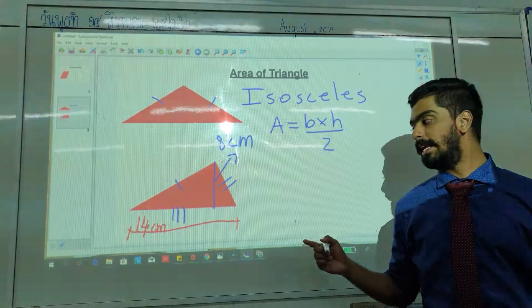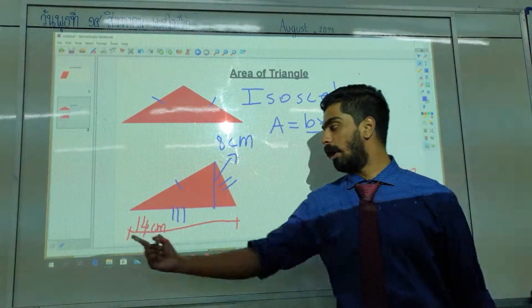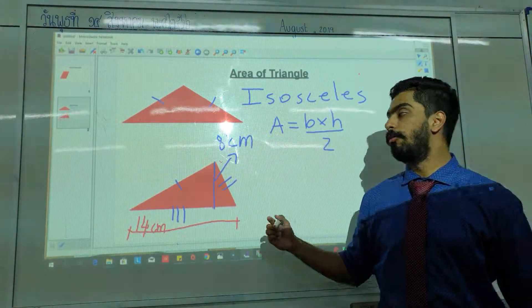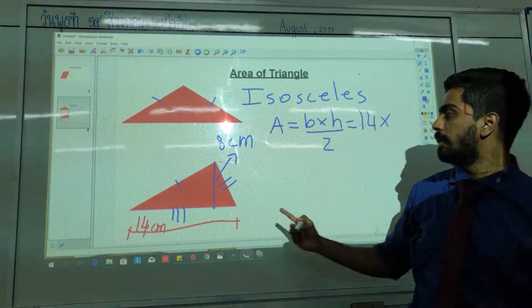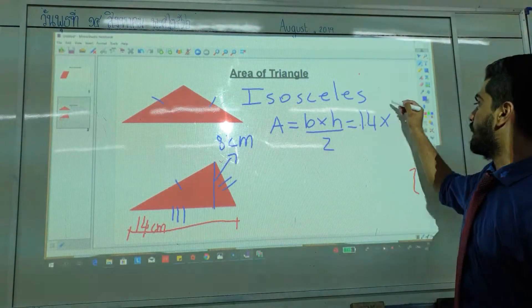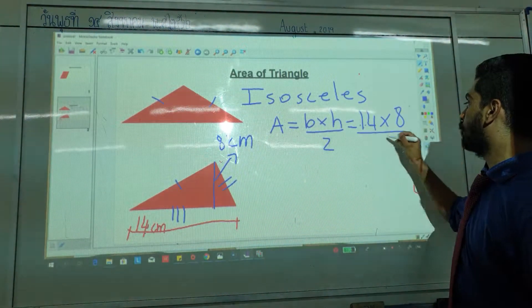Alright guys. What is the value of B? Nikki, how much is B? What is the base? 14. Very good. So we have 14 multiplied by—how much is the height? 8. Over 2.